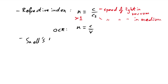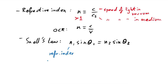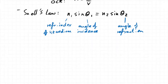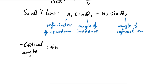For Snell's law I always recommend using n₁ sinθ₁ = n₂ sinθ₂, where n₁ is the refractive index of the first medium, θ₁ is the angle of incidence, and θ₂ is the angle of refraction. Even for critical angle problems, start with Snell's law. The critical angle formula sinθ_c = n₂/n₁ can cause confusion, so I prefer to derive it from Snell's law by setting the refracted angle to 90°.